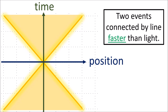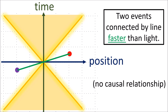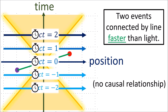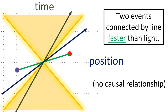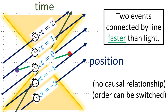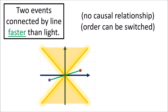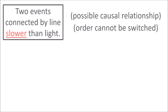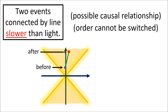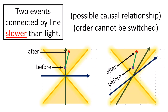If two events in a spacetime diagram are connected by a line that's slower than the speed of light, they could have a causal relationship — for example, a gunshot causing a vase to break. Events with a causal relationship can never have their order switched; it is mathematically impossible using a Lorentz transformation because the position axis can never cross into the light cone. However, if two events are connected by a line faster than light, they cannot have a causal relationship, and so it is possible to switch their order by changing reference frames.